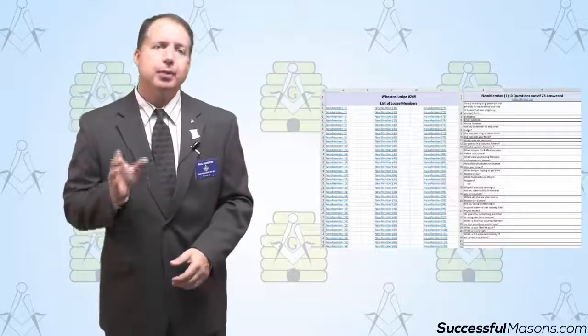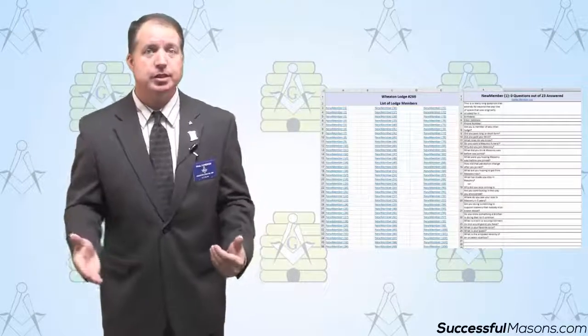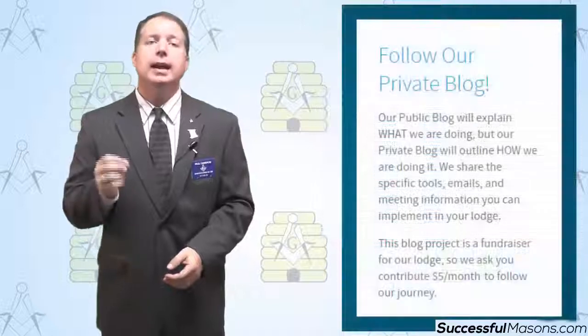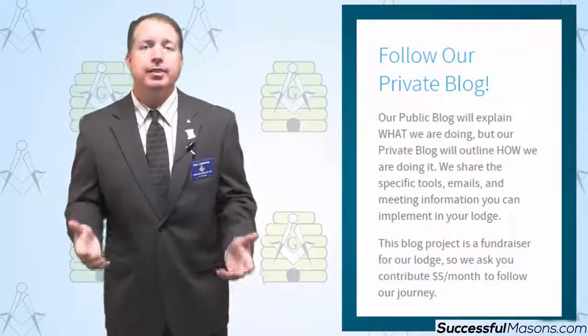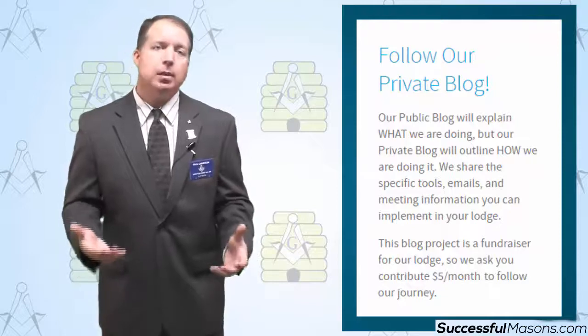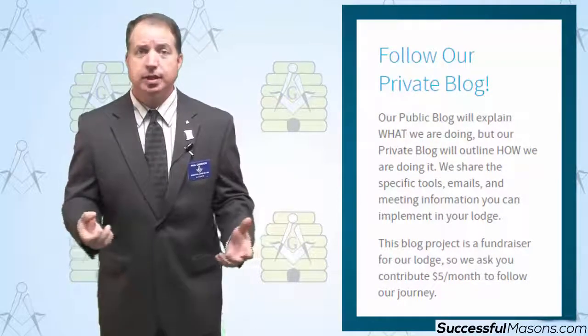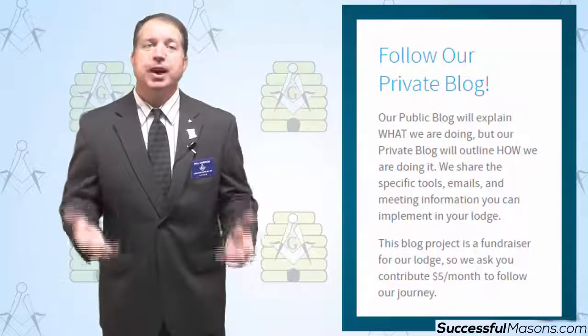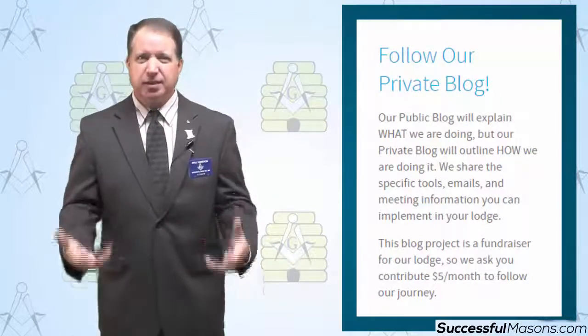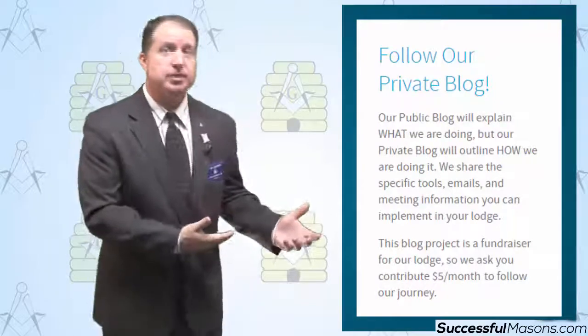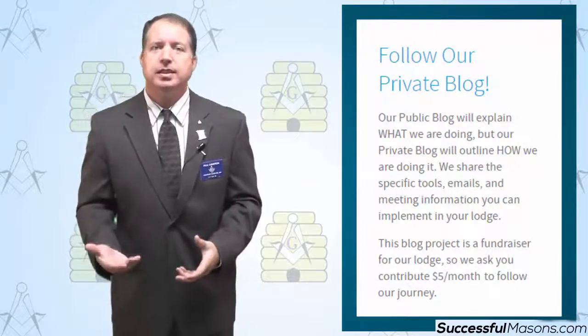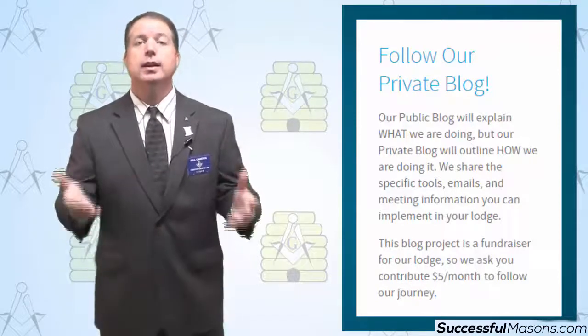And things change over the years so you can keep asking these questions. If you decide to modify the questions that are on this Excel sheet, you don't have to go and cut and paste over and over again. You just change the question on the master list on that master questions page, and that's going to automatically update those questions across all your members pages. It's really turning into a great tool for us. If you're interested in seeing our entire list of questions and using this exact tool, we're happy to give that to you. We have it available in our private blog at SuccessfulMasons.com which is the fundraiser for Wheaton Lodge to help our lodge get things turned around and to help job seekers find new positions, which is a cause that our lodge supports.